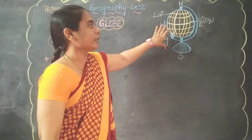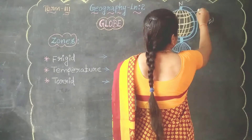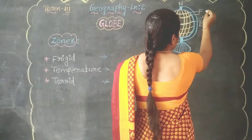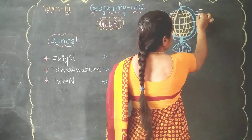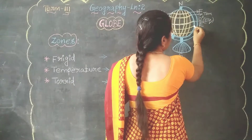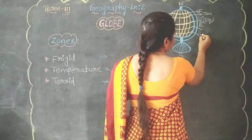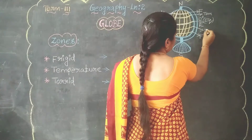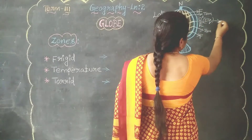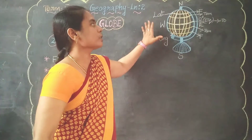The equator is at the middle, the center of the earth — that is the equator. It is also known as the torrid zone. The first zone is the frigid zone, the second region is the temperate zone, and the third one is the torrid zone. So these are the zones.